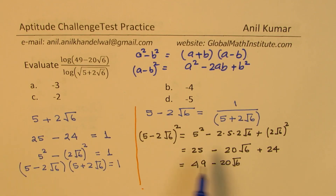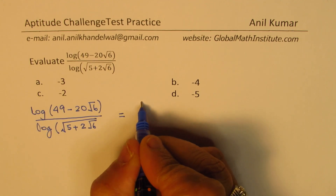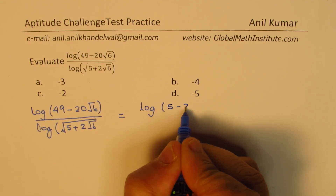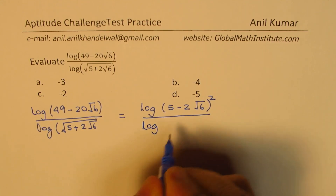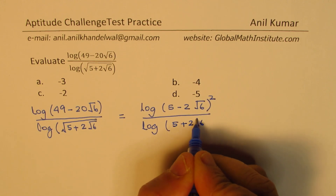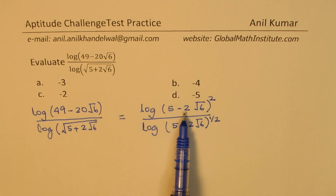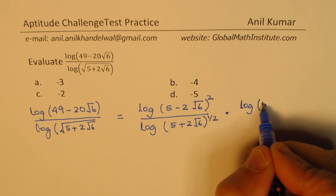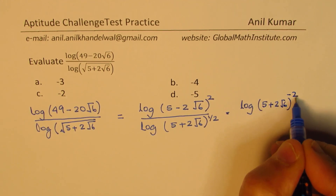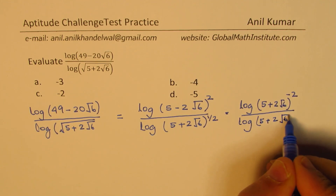49 minus 20 square root 6 can be written as (5 minus 2 square root 6) whole squared. So we could write the numerator as log of (5 minus 2 square root 6) whole squared, and the denominator is log of (5 plus 2 square root 6) to the power of one half.